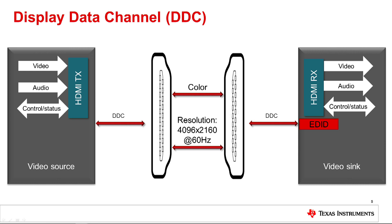If no successful HPD event occurs, the source will be unable to read the EDID information via the DDC and will not transmit data to the sync. To say the least, if HPD is not implemented correctly, then no video output will be seen on the display.